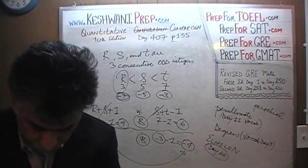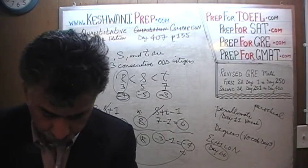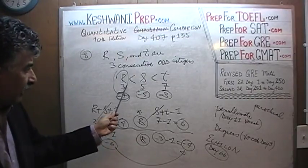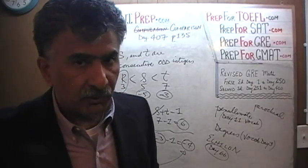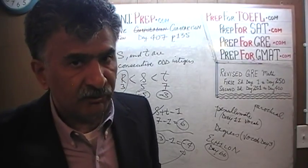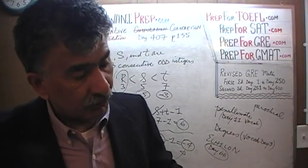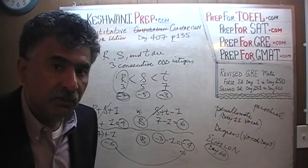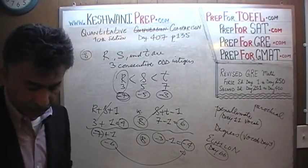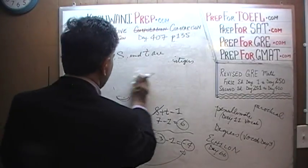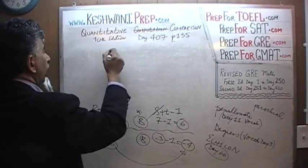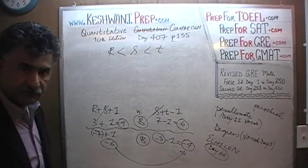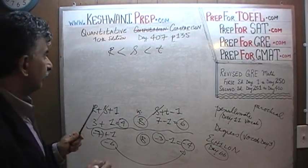And you will also notice, you should also notice that the difference between the two columns, no matter what values you plug in for R, S and T, as long as there are three consecutive odd numbers or for that matter even numbers, the difference between two columns will always be 2. I'll tell you why in a second. Let's put it on top.